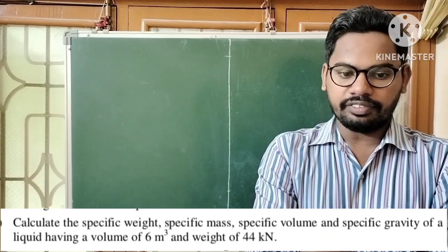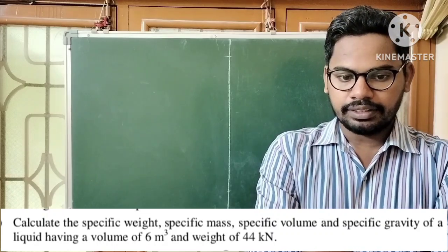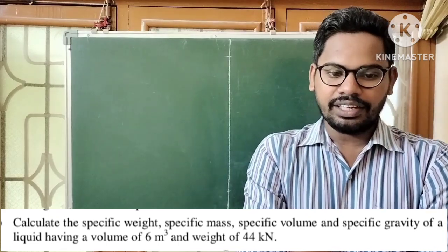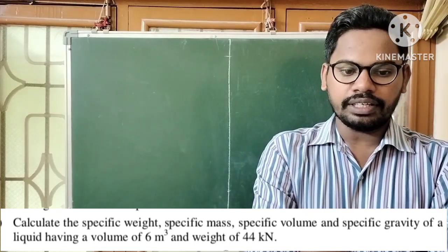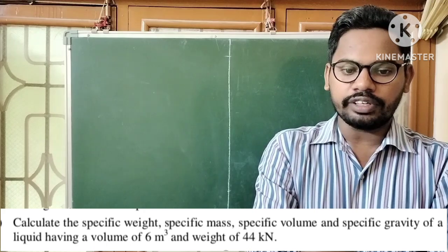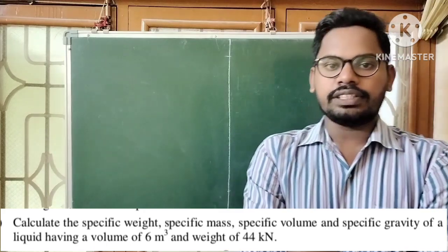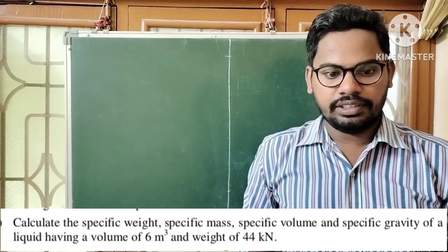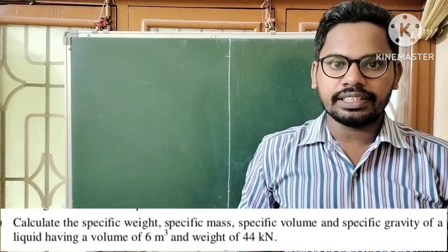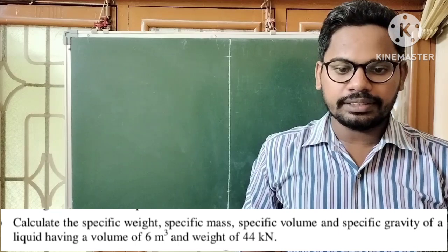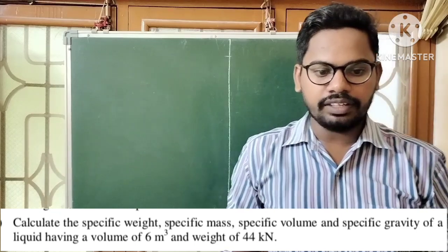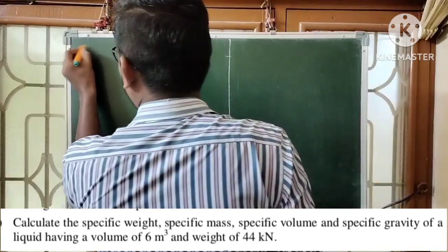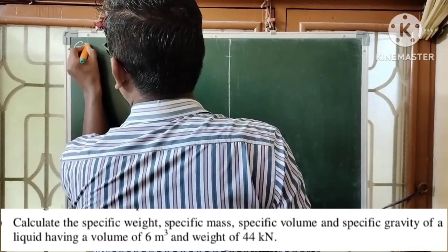Calculate the specific weight, specific mass, specific volume, and specific gravity of a liquid having a volume of 6 cubic meters and a weight of 44 kilonewtons. This is a straightforward question where we have to find 4 quantities. First of all, let us list out the given data.